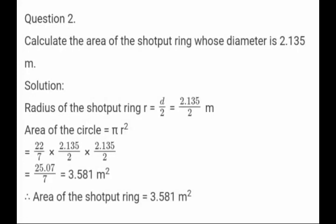Question No. 2: Find the area of the shot put ring whose diameter is 2.135 meter. In this sum, diameter is given. Find radius: radius = diameter ÷ 2 = 2.135 ÷ 2 meter. Area of circle = π r² = 22/7 × (2.135/2) × (2.135/2). Cancel 2 into 22 to get 11; multiply 11 × 2.135 × 2.135 ÷ 7 ÷ 2. We get 25.07 ÷ 7 = 3.581 meter². Therefore, area of the shot put ring is 3.581 meter².